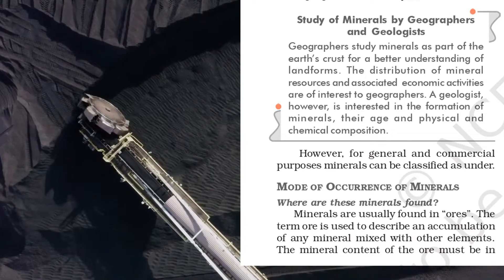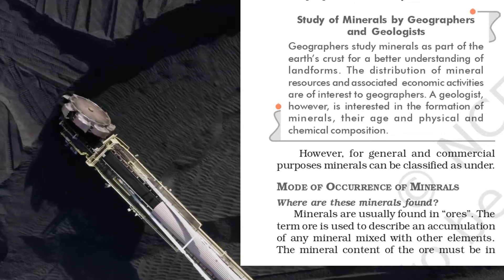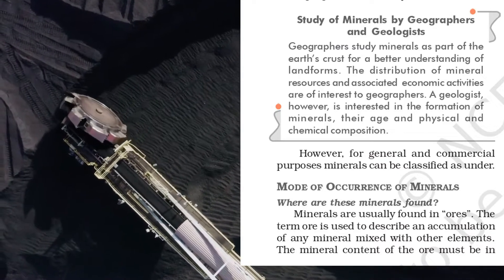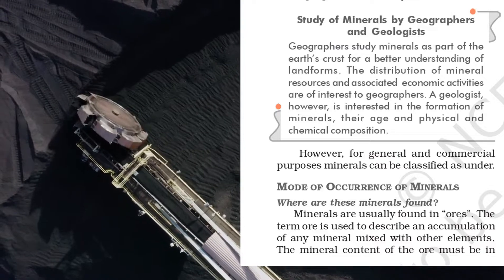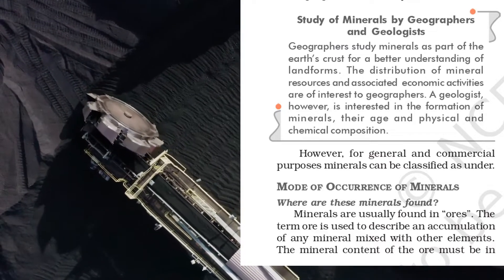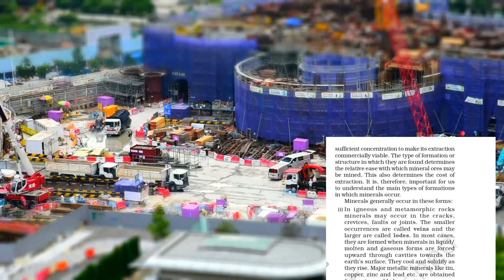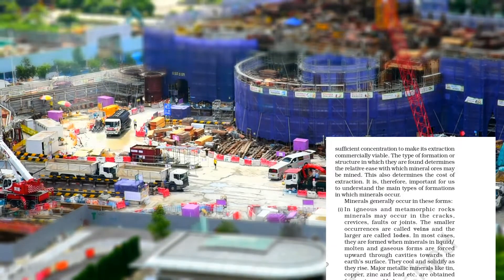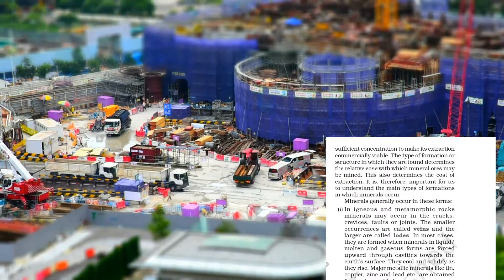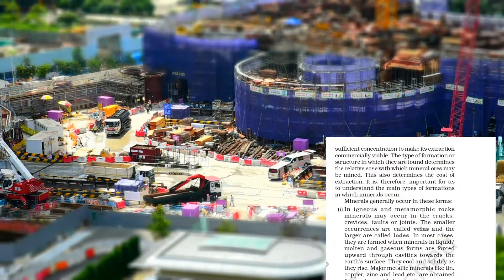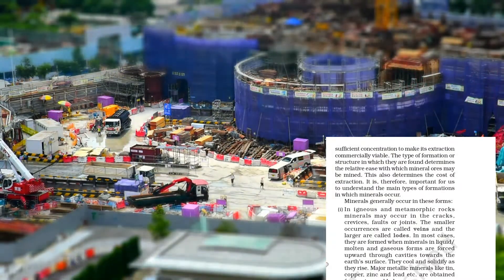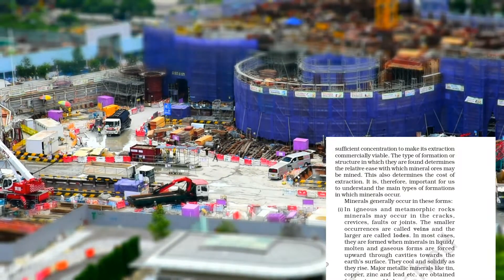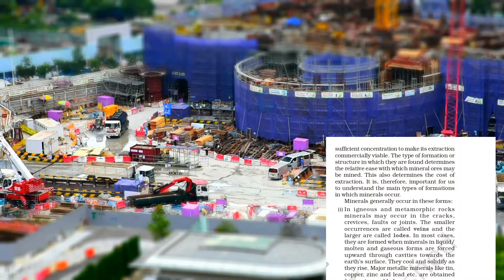Mode of occurrence of minerals — where are these minerals found? Minerals are usually found in ores. The term 'ore' is used to describe an accumulation of any mineral mixed with other elements. The mineral content of the ore must be in sufficient concentration to make its extraction commercially viable. The type of formation or structure in which they are found determines the relative ease with which mineral ores may be mined. This also determines the cost of extraction. It is therefore important for us to understand the main types of formations in which minerals occur.